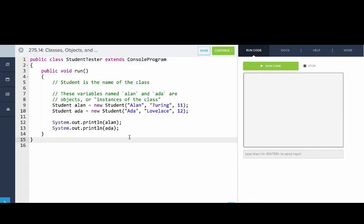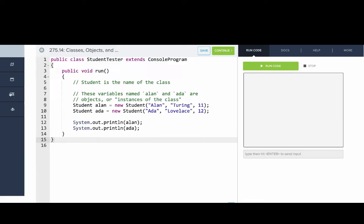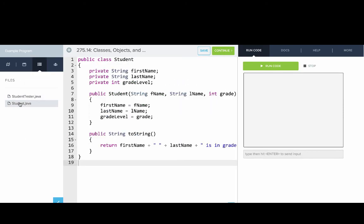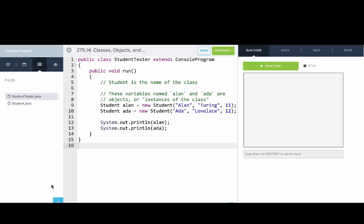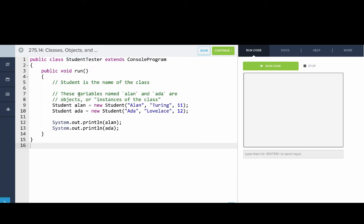Student capital S is the name of the class. If we look in the files on the side we can see Student, that's the name of the class. These variables named Alan and Ada are objects or instances of the class. You can see Student, that's the type, but Alan is the name of the specific object. Let's run this code to see.